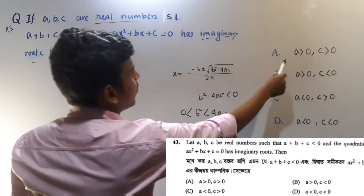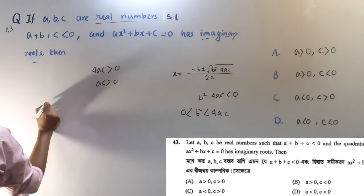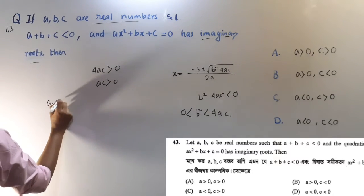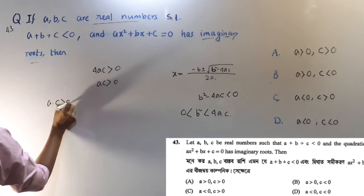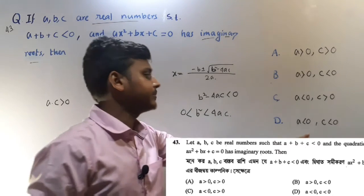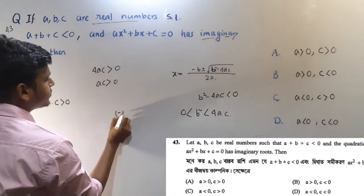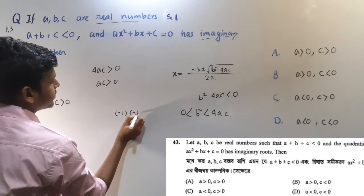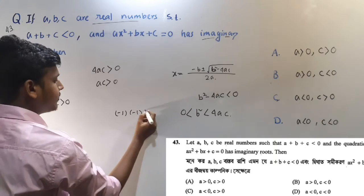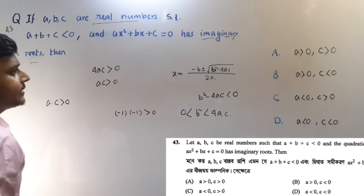Considering option A: C is positive — the product of two positives is always greater than 0. Option C: both A and C are negative. For example, minus 1 times minus 1 is always positive, so the product AC is still positive.